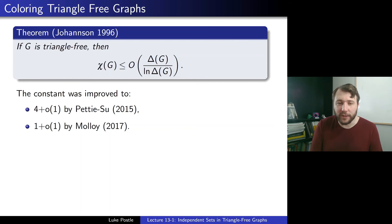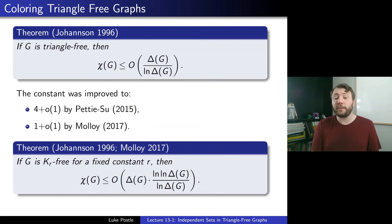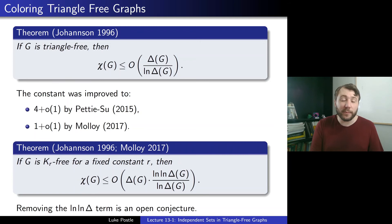Johansson in 1996 and Molloy in 2017 also showed that if G is Kr-free for a fixed constant r, then chi is at most on the order of delta · log log delta / log delta — so there's an extra log log delta factor. Whether this log log term can be removed is still a major open problem.